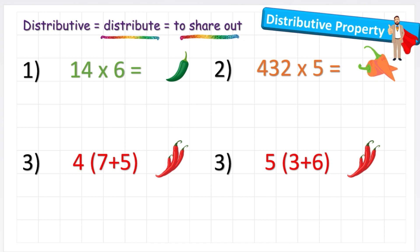So we can look at a question like this first example, 14 times 6. And if we couldn't work out 14 times 6 and we didn't have time to do the written method, what we could do is we could distribute the numbers differently.